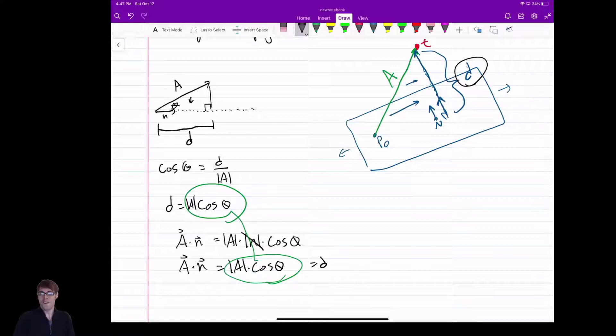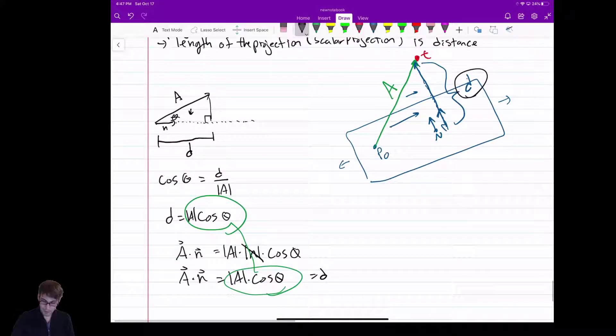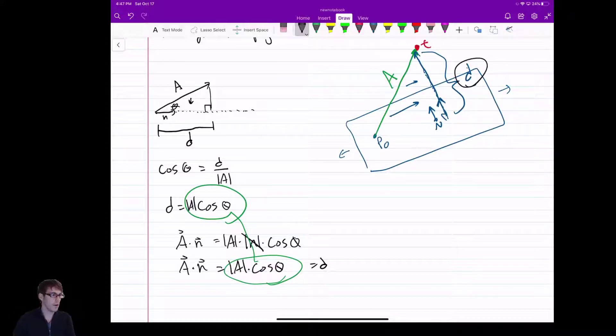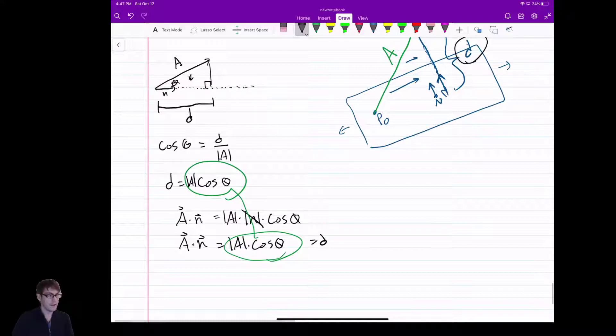Did you follow that? Look at it again. So if I want the distance of my point T, I get my vector A, I project it onto N, all I do is A dot product N, two multiplications and an addition, and I'm ready to go. So this is a very simple calculation.